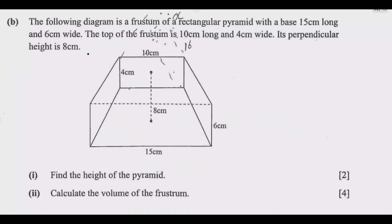Question B: the following diagram is a frustum of a rectangular pyramid with a base 15 cm long and 6 cm wide. The top of the frustum is 10 cm long and 4 cm wide. Its perpendicular height is 8 cm. Roman numeral 1: find the height of the pyramid. Roman numeral 2: calculate the volume of the frustum.